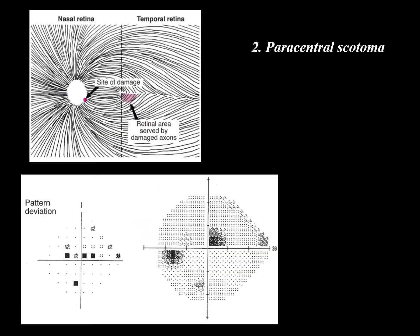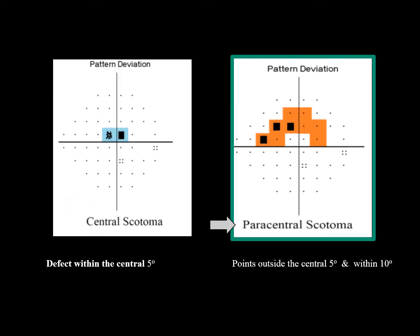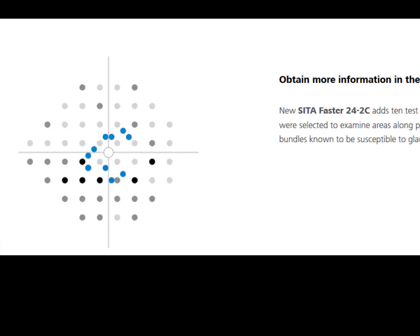Second is paracentral scotoma: defects in this area, inside the central 10 degrees but outside the central 5 degrees. If you have a defect within the central 5 degrees, that is a central scotoma. Paracentral means it is outside the central 5 and within the central 10. The new Humphrey software includes these paracentral area points, as this pattern is commonly seen in early stages of glaucoma.